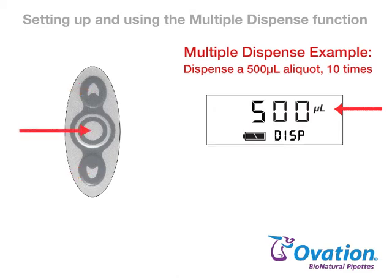Press and release the center button to lock in this new volume setting and advance to the current count setting. The count setting will either be the last number of dispenses used or the maximum number of full dispenses that can be performed at the new volume setting.